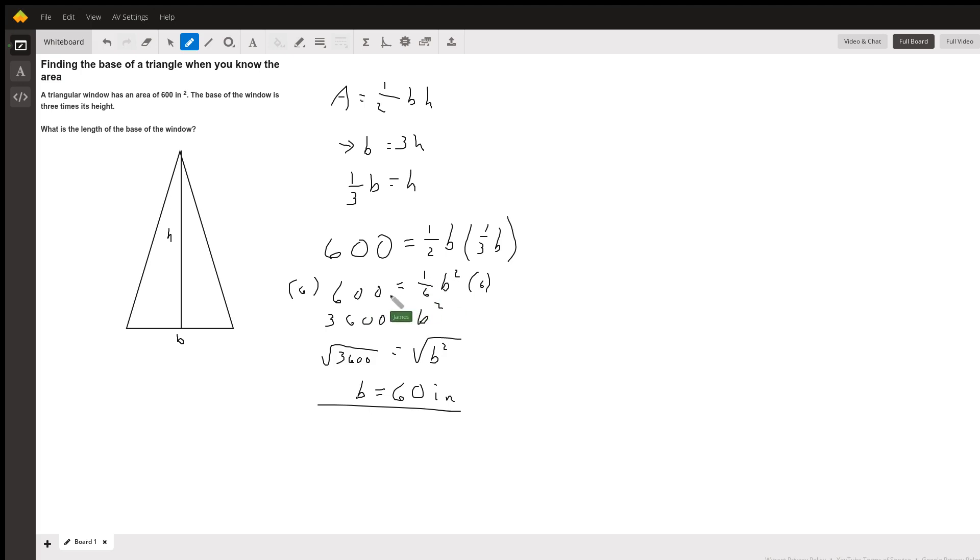I want to get B squared by itself, so I'm going to multiply both sides by six. That gives me 3,600 equals B squared. Take the square root of both sides. B equals 60 inches.